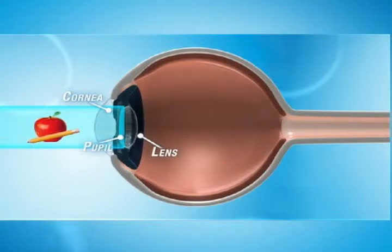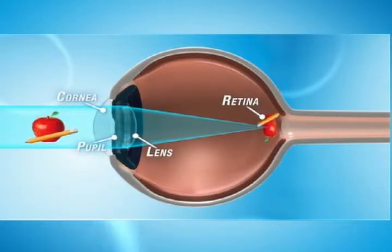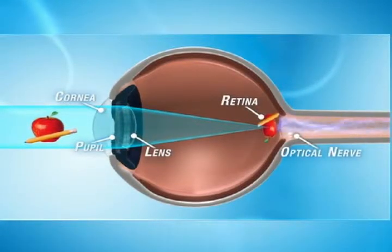The lens projects it as a clear image onto the specialized nerve cells of the retina. These cells convert light to electrical signals. The optic nerve sends these signals to the brain, which interprets them as vision.